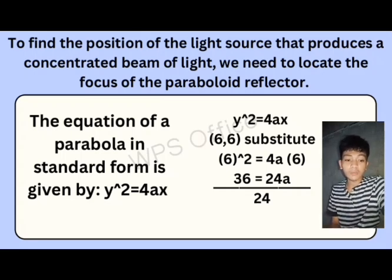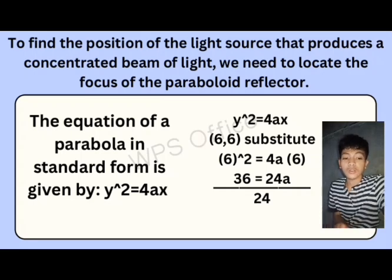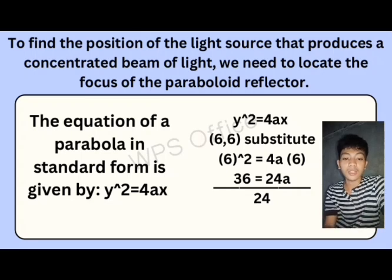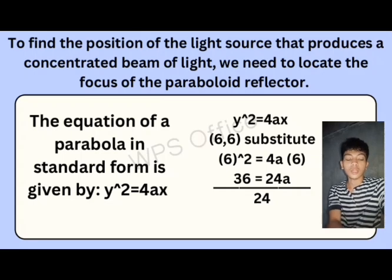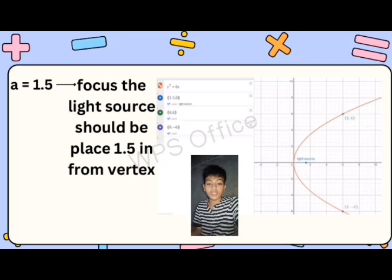Using the formula y² = 4ax and substituting the coordinates (6, 6): 6² = 4a(6), so 36 = 24a. Dividing both sides by 24: 36 ÷ 24 = 1.5. Therefore, A = 1.5.